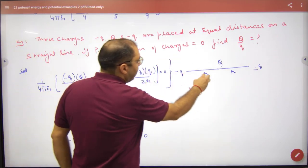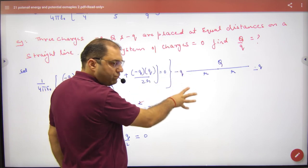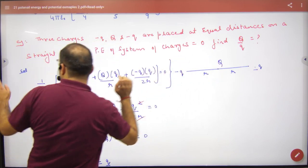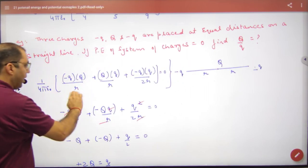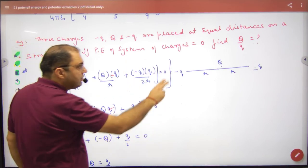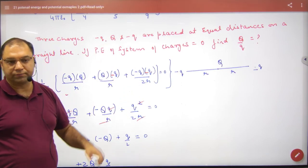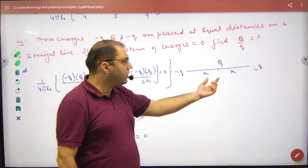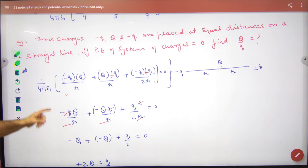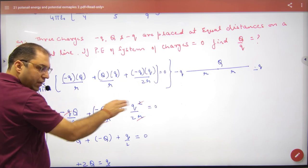तीन charges हैं: −q, Q, −q एक line में पड़े हैं at a distance r। अगर system की energy तीनों की मिलाकर 0 है, तो charge की ratio निकालो। System की energy: पहली pair (−q और Q): (1/4π ε₀)(−q·Q/r)। दूसरी pair (Q और −q): (1/4π ε₀)(Q·(−q)/r)। तीसरी pair (−q और −q): (1/4π ε₀)(q²/2r)। तीनों का sum = 0। 1/4π ε₀ कट जाएगा, q, r भी cancel होंगे — solve करके ratio आजाएगी।